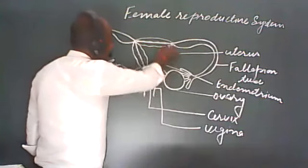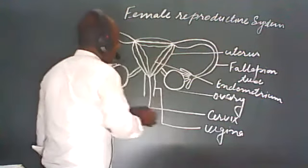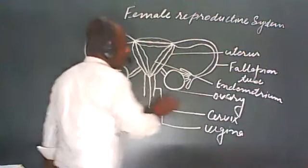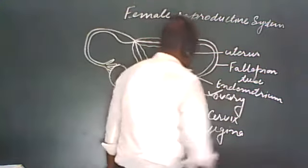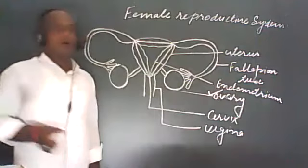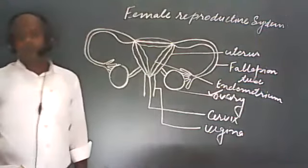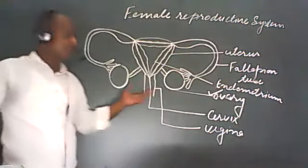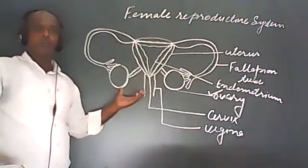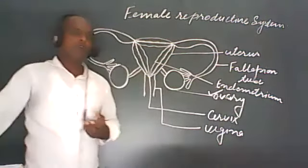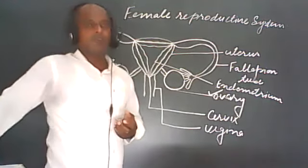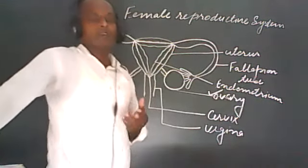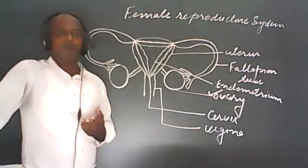If we see the structure, this portion is called the uterus, and these round structures — two in number — are called the ovary. The ovary is the primary sex organ found in females. The ovaries are a paired structure found on both sides, and the ovary is helpful to release the ova.